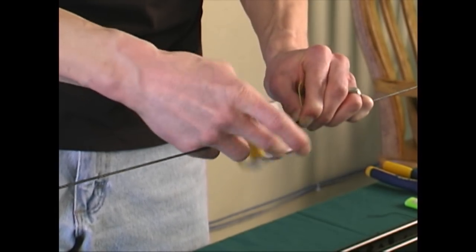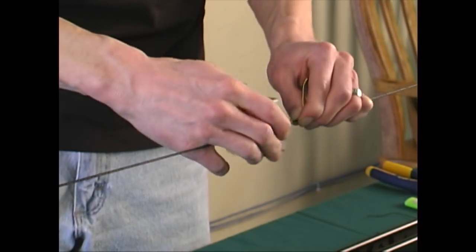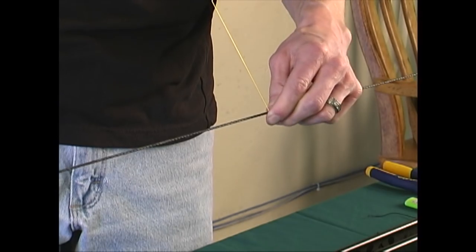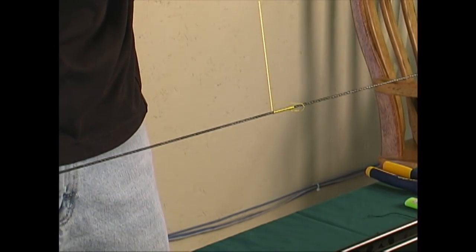Continue the serving until you get towards the end, about the last inch or so. Pull extra string material from the serving jig and cut it loose, say roughly about 8 inches.